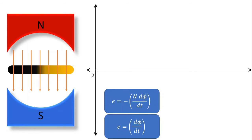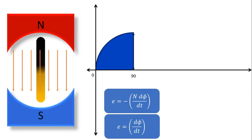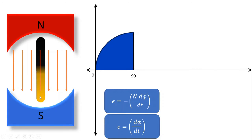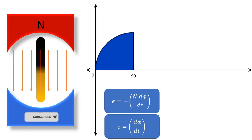When we move this conductor, it shifts from position number 1 to position number 2. At position number 2, its velocity is perpendicular to the magnetic lines of force — the velocity is in one direction and the magnetic lines of force are in the other direction. Hence there is maximum change of flux at this position, and because of the maximum change of flux, there is maximum induced EMF in this conductor.